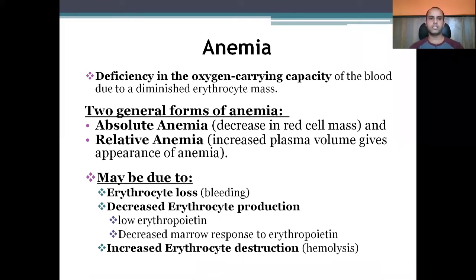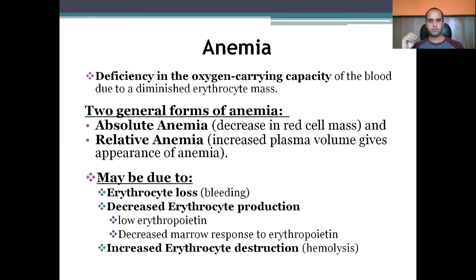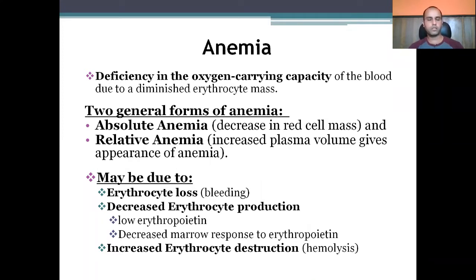Anemia is classified as severe if hemoglobin is less than 7 g/dL. It decreases the oxygen-carrying capacity of the blood as a result of diminished erythrocyte mass. Two general forms are absolute anemia — due to actual decrease in red cell mass — and relative anemia — due to increased plasma volume giving the appearance of anemia, as seen in pregnancy. Causes include erythrocyte loss from bleeding, decreased erythrocyte production, or increased erythrocyte destruction from hemolysis.